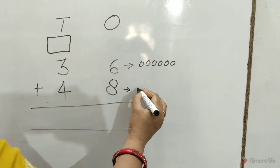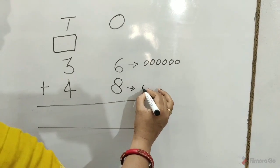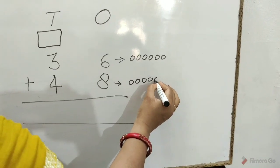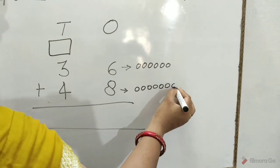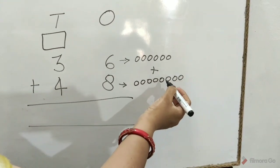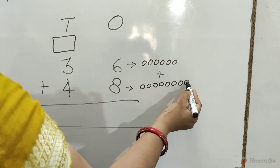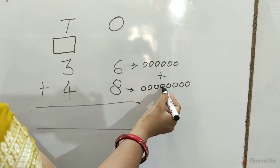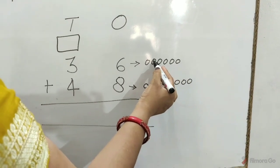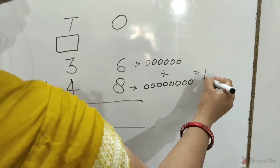And we can draw 8 circles in front of 8 ones: 1, 2, 3, 4, 5, 6, 7, 8. Now we count all together: 1, 2, 3, 4, 5, 6, 7, 8, 9, 10, 11, 12, 13, 14. The total number of circles are 14.